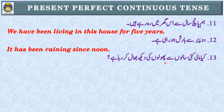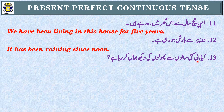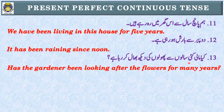Sentence 13: 'کیا مالی کئی سالوں سے پھولوں کی دیکھ بھال کر رہا ہے؟' Identification: 'رہا ہے' اور 'کئی سالوں سے' — Present Perfect Continuous Tense۔ Subject: 'مالی' یعنی gardener — singular noun — has been۔ Interrogative: has کو start میں لے آئیں گے۔ Has the gardener been looking after the flowers for many years?